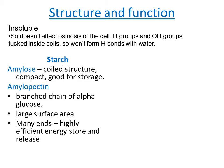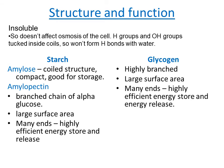Starch in both amylose and amylopectin forms has a very coiled, compact structure, good for storage. The main benefit of amylopectin is it has a very large surface area with a large number of ends, making it easily broken down and efficient at releasing energy when required — because the enzymes that break down starch only act at the chain ends. Glycogen is even more highly branched, with a much larger surface area, making it an incredibly efficient energy store.